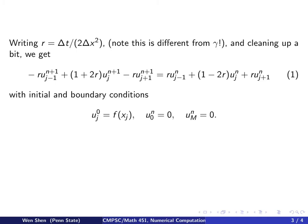With initial and boundary conditions: u_j^0 equals f of x_j, u_0^n equals 0, u_M^n equals 0. Note that scheme (1) gives a tri-diagonal system to solve at every time step.